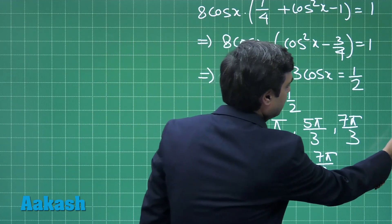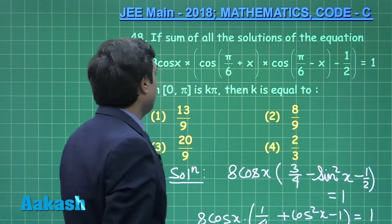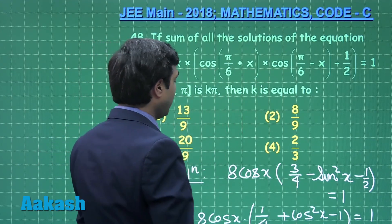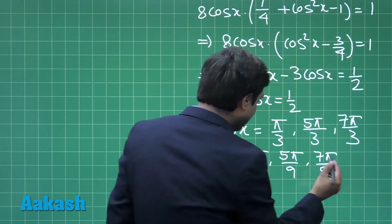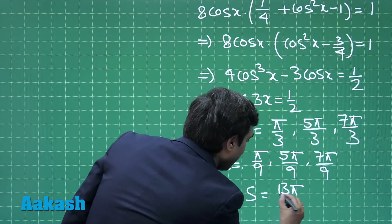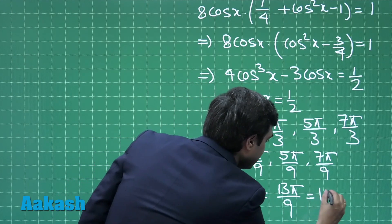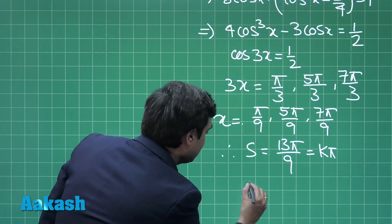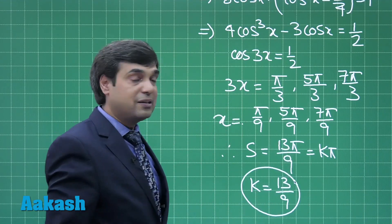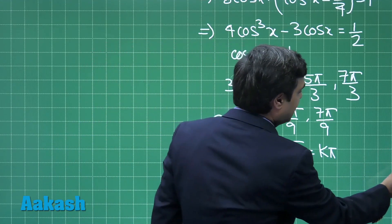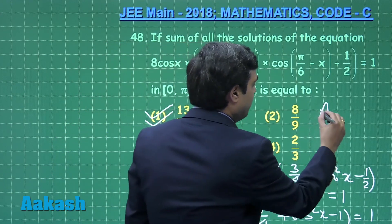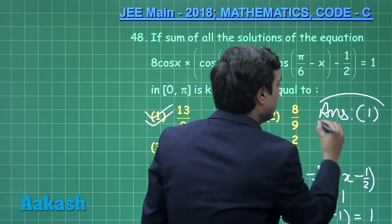The sum of all solutions equals kπ. Adding the three values: π/9 + 5π/9 + 7π/9 = 13π/9 = kπ, hence k = 13/9. Checking the options, 13/9 corresponds to option 1, which is the correct answer.